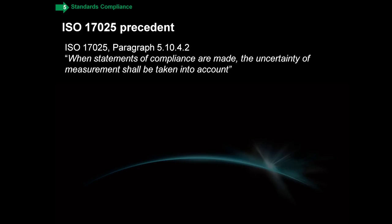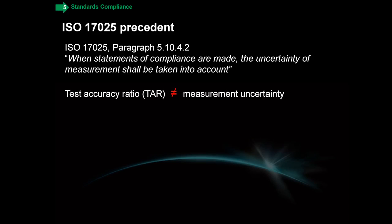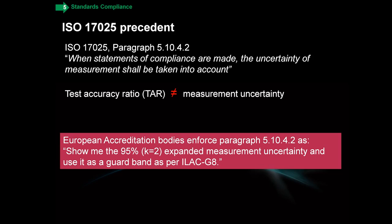There are all kinds of variations on this. Sometimes you hear, 'we did that — I've got our test accuracy ratio right here, we're all set.' Well, test accuracy ratio, as defined in the early 80s in MIL-STD 45662, is not the same as measurement uncertainty and should not be construed as such. For those of you in a European audience or in the Far East, many of your accreditation bodies enforce that paragraph as saying: use expanded measurement uncertainty as per ILAC G8, and guard band it.